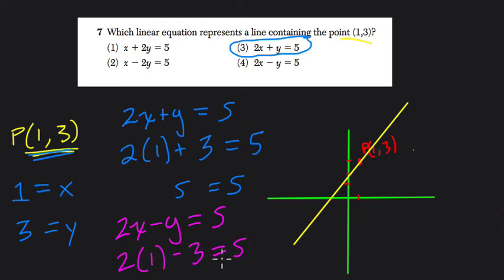Does that equal 5? No, because 2 times 1 is 2, minus 3 is negative 1, and negative 1 does not equal 5. So that means that this point (1,3) is not on this line, because we get this equation that's not balanced.